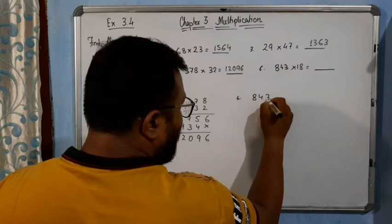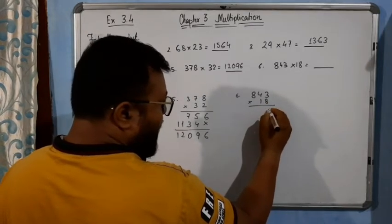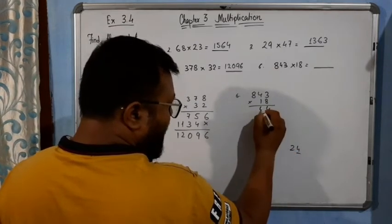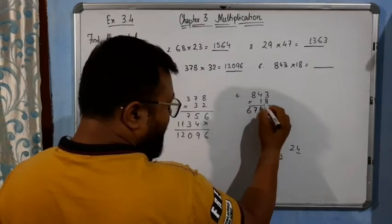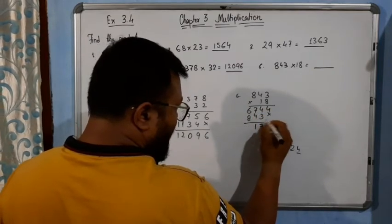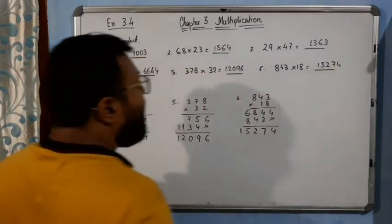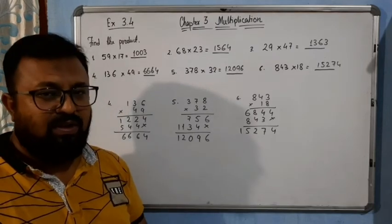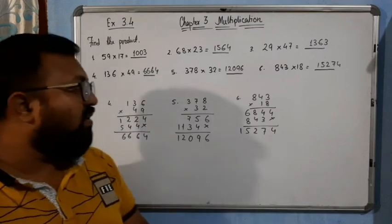And lastly, question number 6: 843 multiplied by 18. 8 times 3 is 24, write 4 carry 2. 8 times 4 is 32, plus 2 is 34, carry 3. 8 times 8 is 64, plus 3 is 67. Cross: 1 times digits, carry forward — the answer is 15174. These are very simple multiplications. You only need to know your tables up to 20 in this standard — it will be helpful for you in future classes. I hope you understood. Thank you.